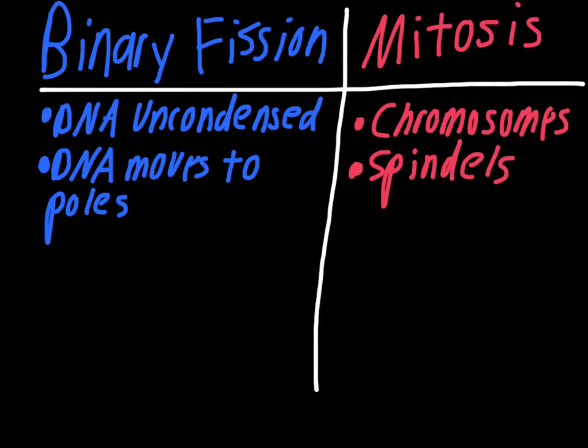Comparing the two processes: in mitosis you have chromosomes, whereas in binary fission in prokaryotic cells the DNA is uncondensed. Another difference is the spindles in mitosis — the string-like structures that move the chromosomes around, generated by the centriole, which pushes the chromosomes around during cell division. In binary fission, the DNA just moves to either side of the cell and it's not nearly as organized or structured.